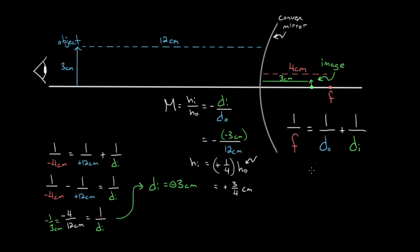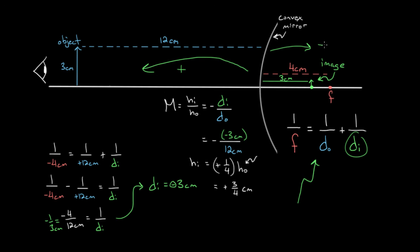To recap: you can use the mirror equation to figure out where images are located. The sign convention we're using is that objects, images, and focal lengths in front of the mirror are positive; anything behind the mirror is negative. You can use the magnification equation to find how tall the image is relative to the object by taking negative the image distance over the object distance.